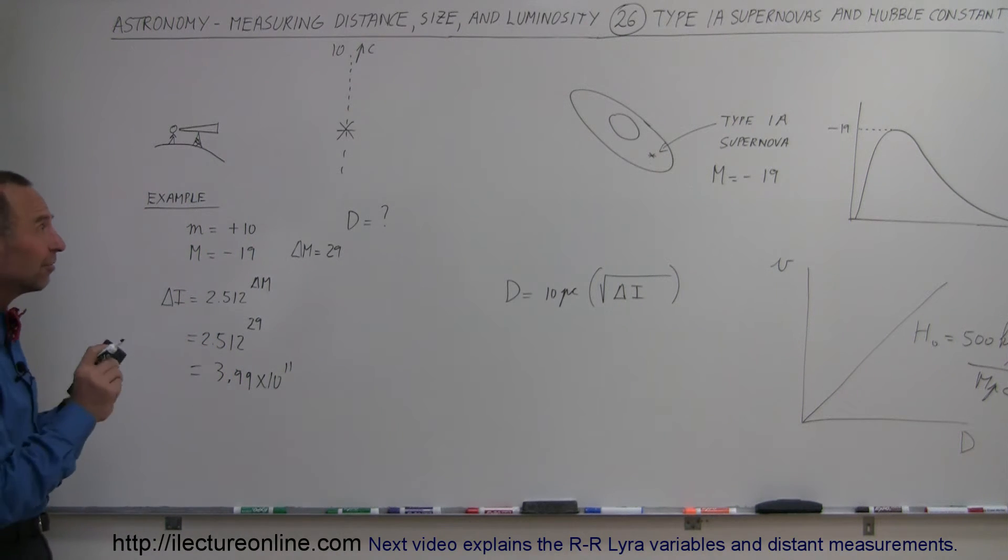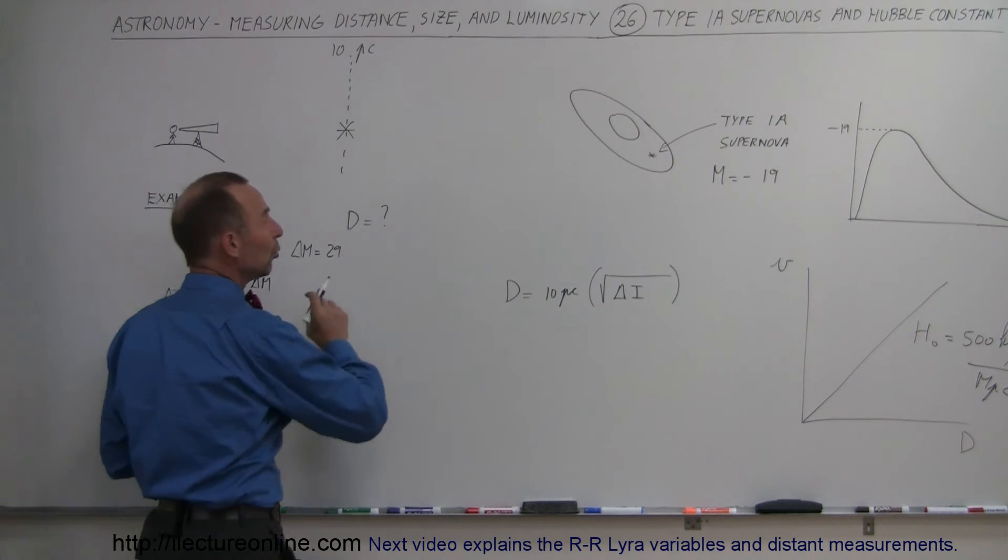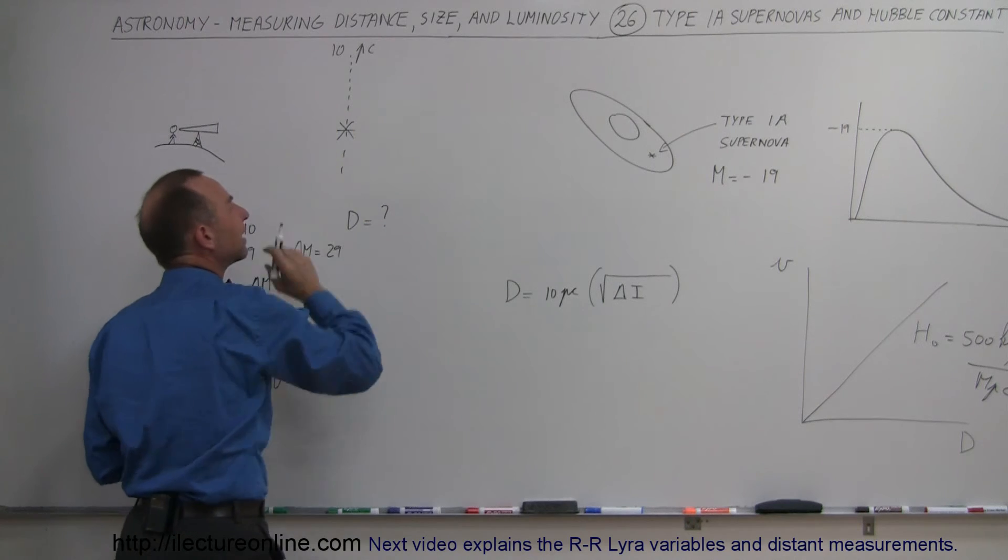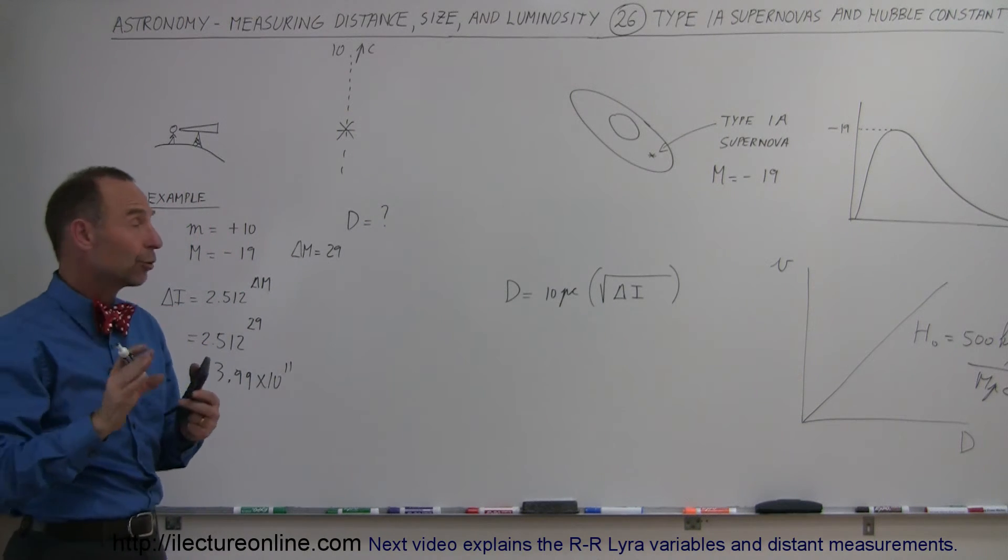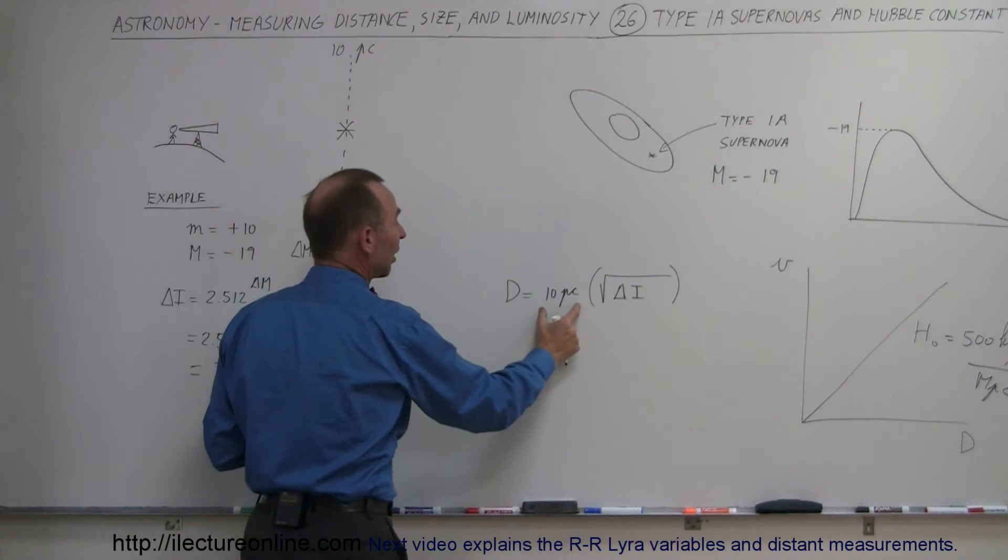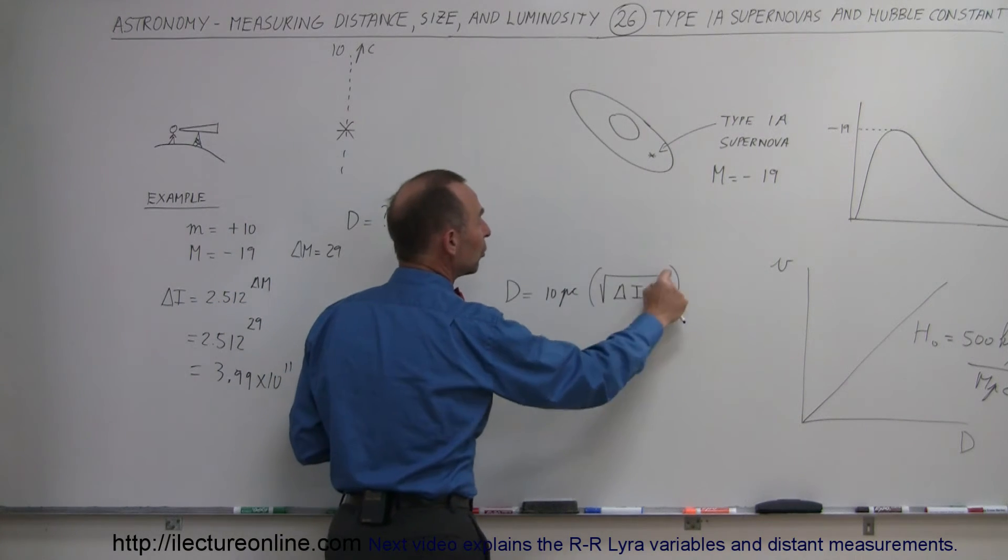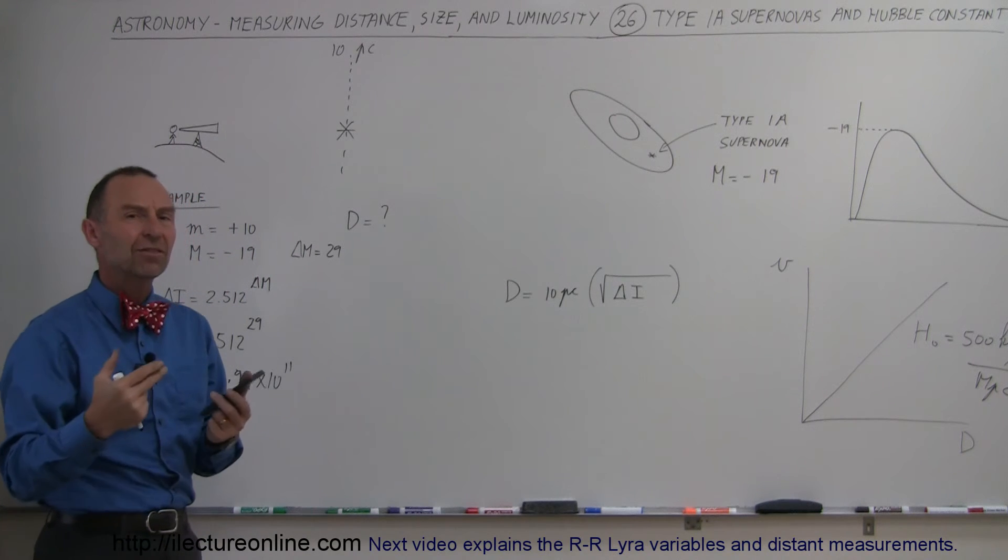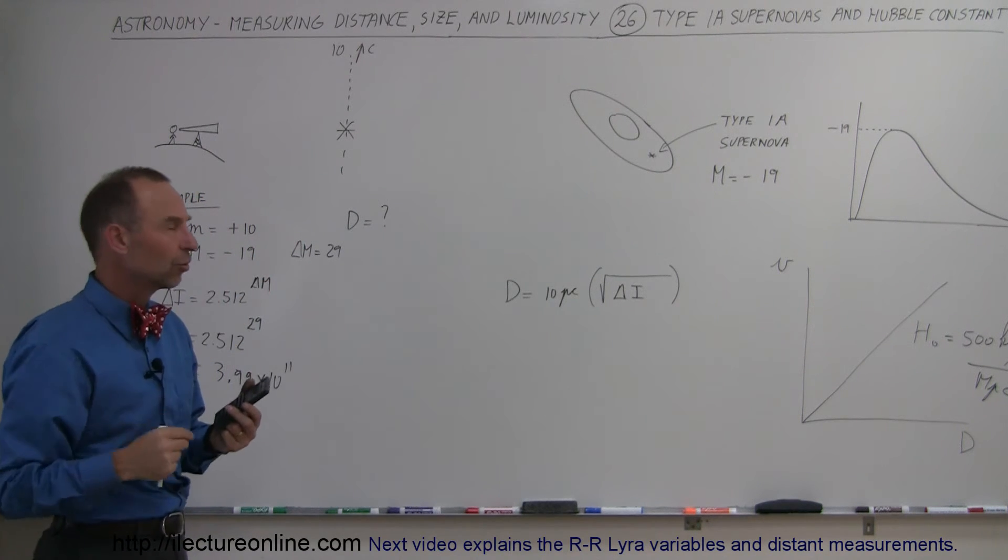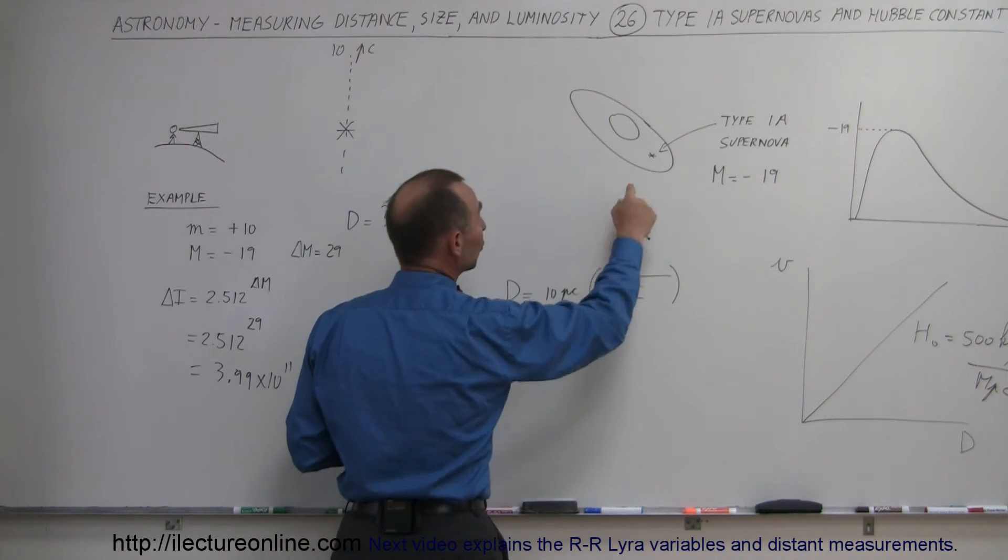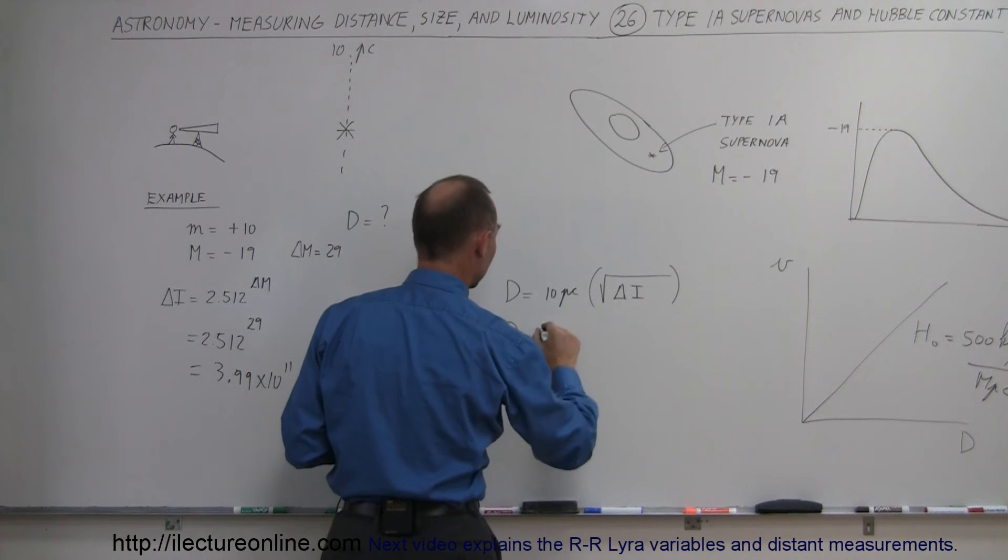So, that would be the difference in intensity, the difference in luminosity, to where it's actually occurring, to what it would be if it was only 10 parsecs away. So, therefore, to find out where it actually occurred, the distance, we take the distance 10 parsec and multiply it times the square root of the difference in intensity. Because, remember, the intensity is proportional to 1 over the distance squared.